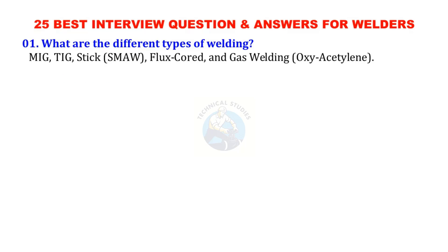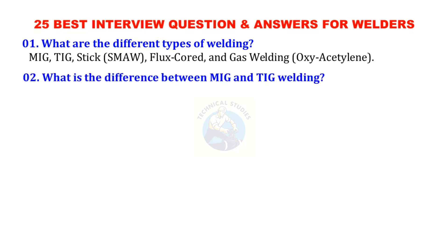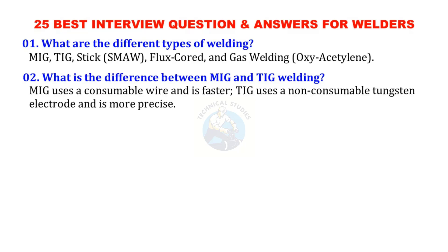What is the difference between MIG and TIG welding? MIG uses a consumable wire and is faster; TIG uses a non-consumable tungsten electrode and is more precise.